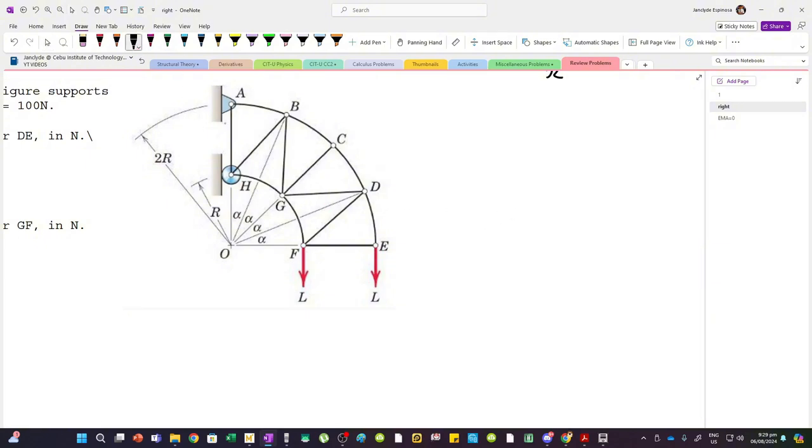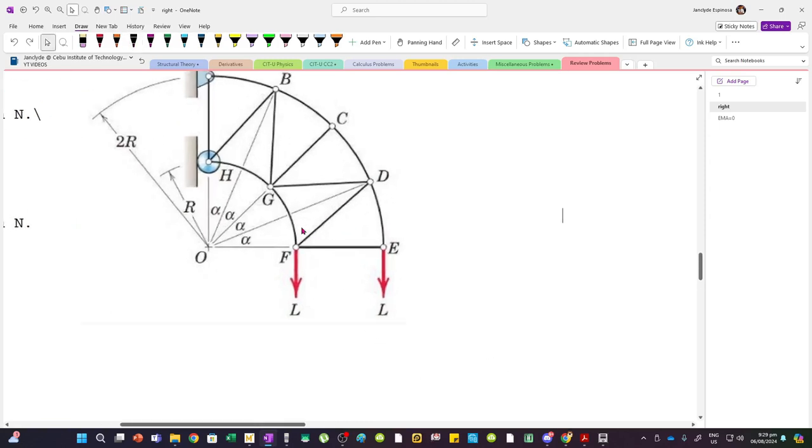So we can treat that as a straight line and then find the inclination with respect to the horizontal. We can connect the arc lengths. From G to F, we can connect a line, and from D to E, we can also connect a line. That's what we'll do.